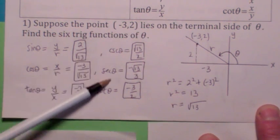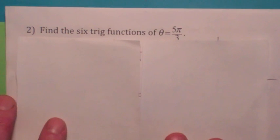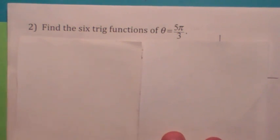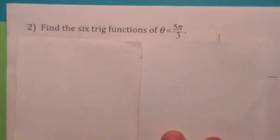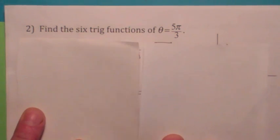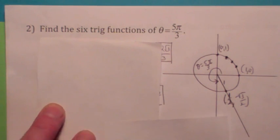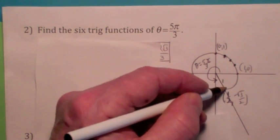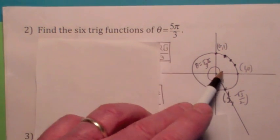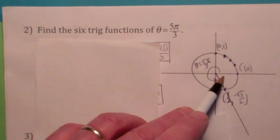The other three trig functions are just the reciprocals of the first three. Now, if you want to find the six trig functions where theta equals 5π/3, why not use the unit circle? You've already studied it. I'm picking a point right here — 5π/3 moves us into the fourth quadrant, and so the reference angle is π/3.